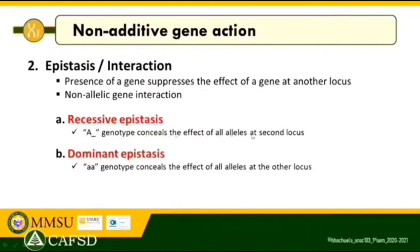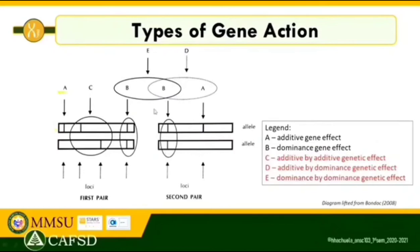For recessive epistasis, either the dominant or heterozygous genotype conceals the effect of all alleles at the second locus. For dominant epistasis, the homozygous recessive genotype conceals the effect of all alleles at the other locus. Please recall your genetics lessons specifically on epistasis or interaction gene action.